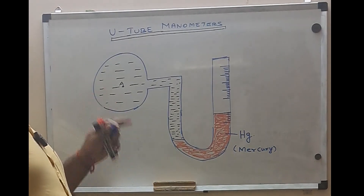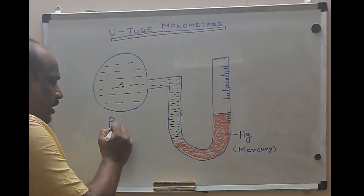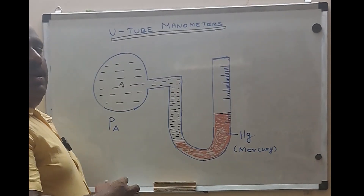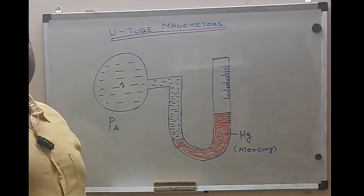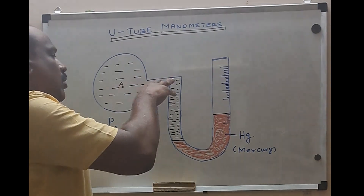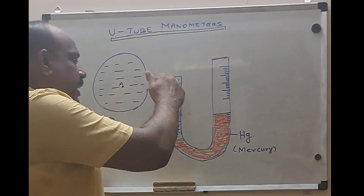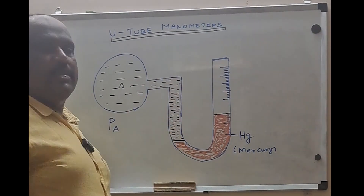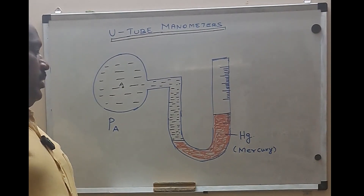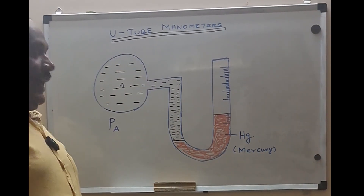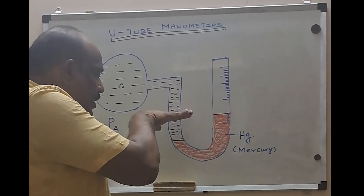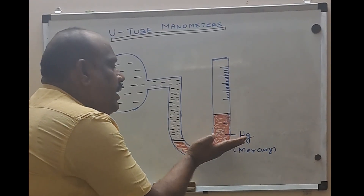I want to measure the pressure of liquid A. I am going to allow this liquid — taking water as an example — through a small opening, allowing this fluid to run down because of gravity as well as the pressure exerted by liquid A. Because this liquid has more pressure, it will press the mercury downwards, so the mercury rises on the other side.